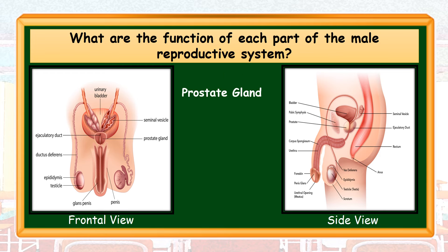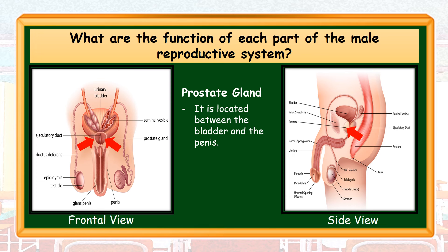Prostate gland — it is located between the bladder and the penis. It produces fluid that nourishes and protects the sperm cell.